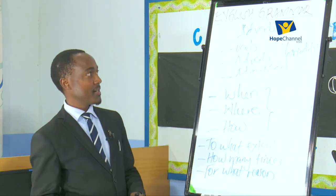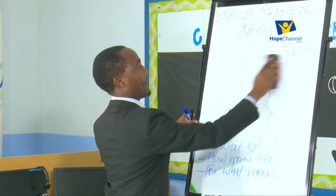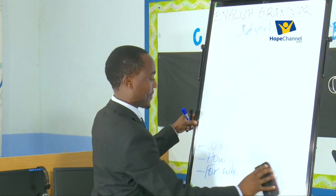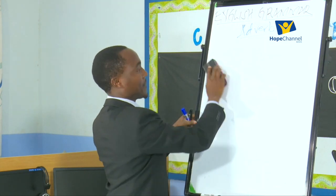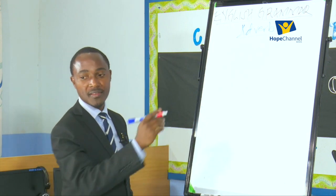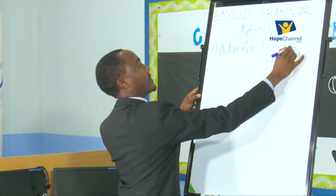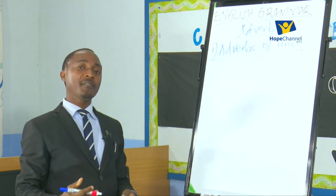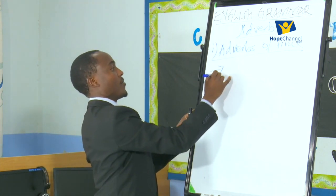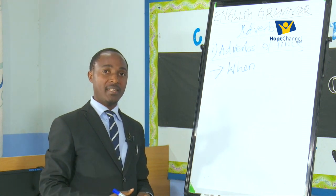Having learned the function and general information about adverbs, let's look at the types of adverbs. We will look at various types so that we understand more specifically what each type of adverb does in a sentence. We begin with number one: adverbs of time. The first type is an adverb of time.